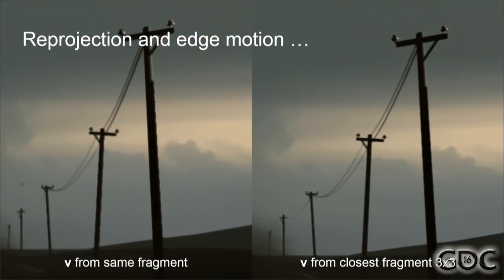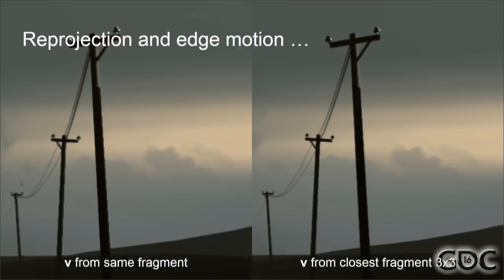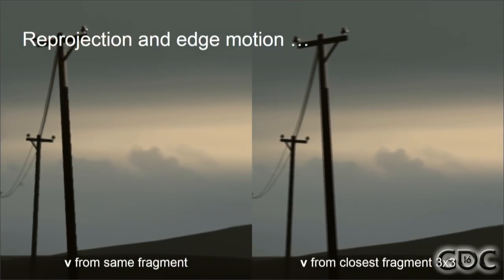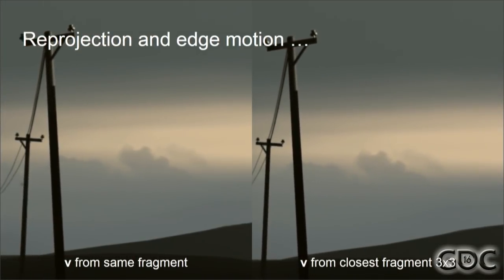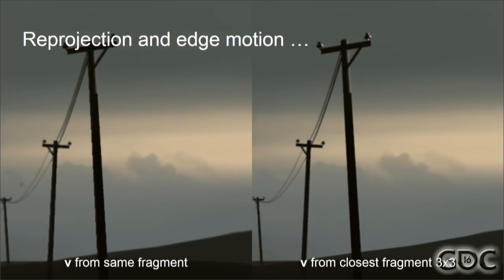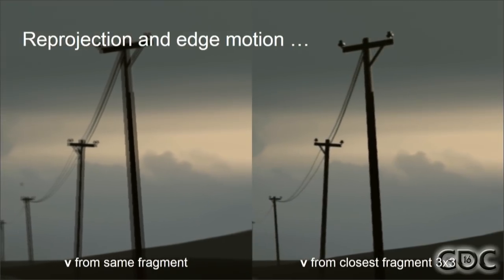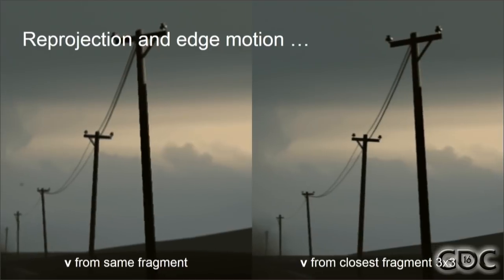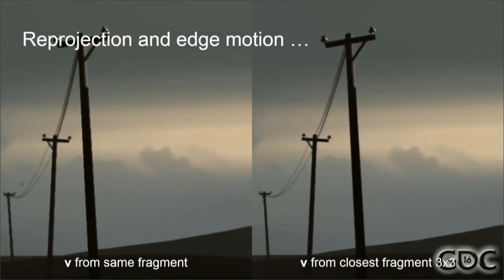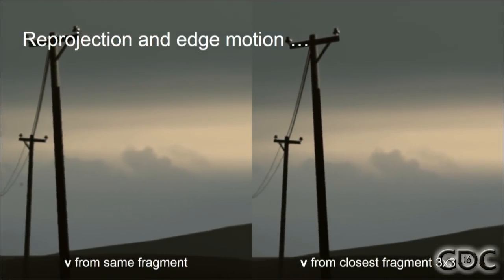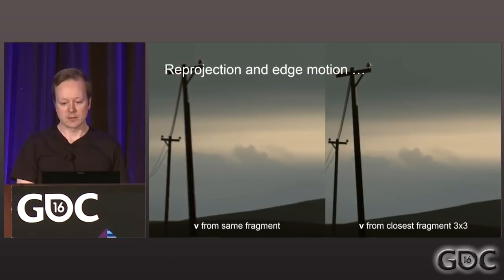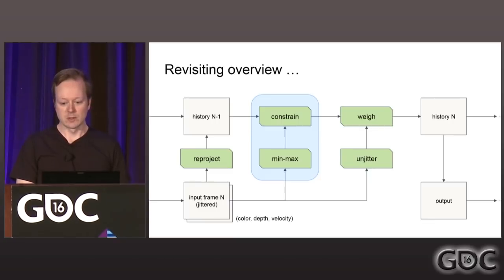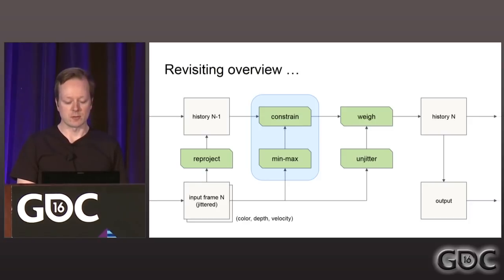Here's an example. On the left, velocity from the current fragment is used for reprojection. On the right, velocity from the closest fragment in the three-by-three region. Now we have our reprojection completed and we have a history sample. We have to constrain this history sample because, as I mentioned, we may have a false reprojection.